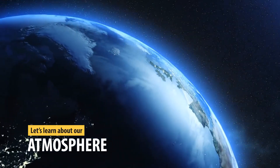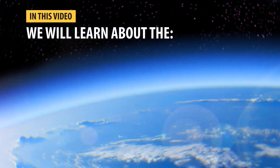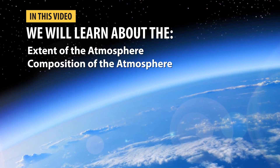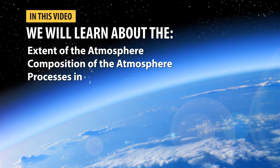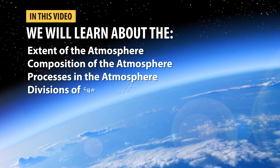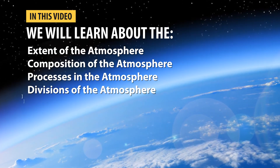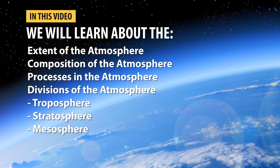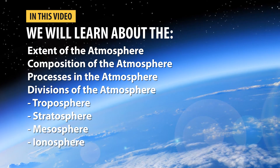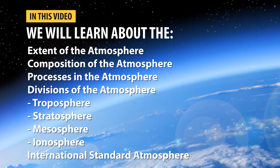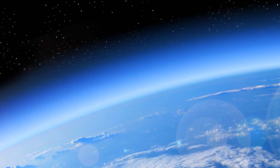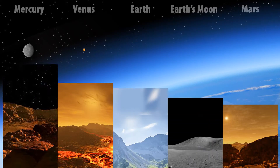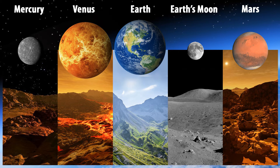Let's learn about our atmosphere. In this video we will learn about the extent of the atmosphere, the composition of the atmosphere, processes in the atmosphere, the division of the atmosphere — which are the troposphere, the stratosphere, the mesosphere, and the ionosphere — and the International Standard Atmosphere. An atmosphere is simply a layer of gas that surrounds the world.